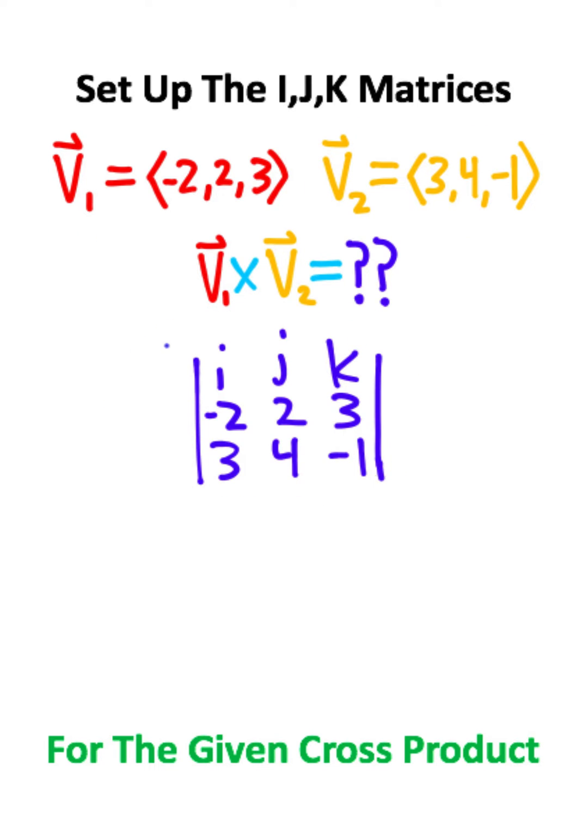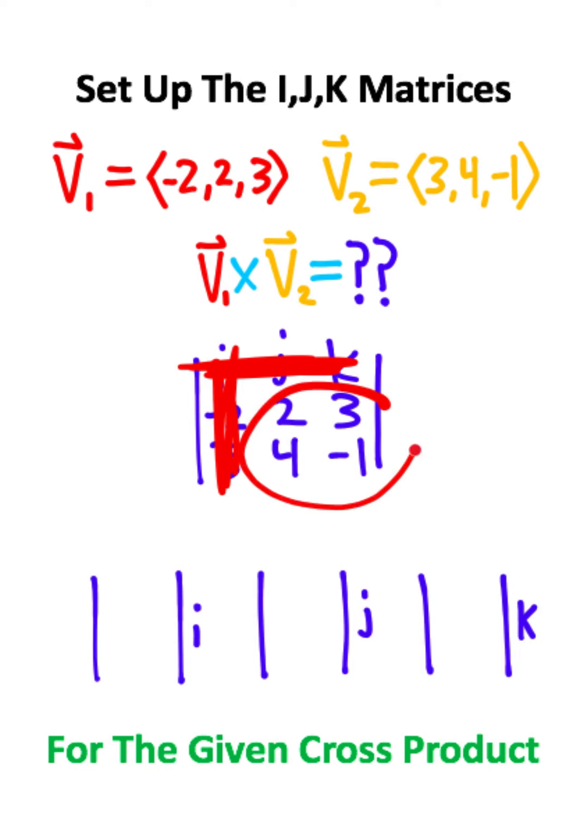Now once you have this big matrix, what you want to do is set up three small matrices for i, j, and k. So to set up the i matrix, we're going to go to i in this big matrix, and we're going to cross out the row and the column. So 2, 3, 4, negative 1 is the matrix you want for your i matrix.